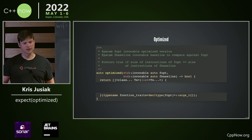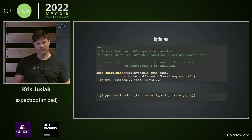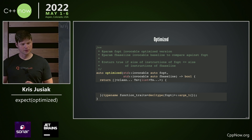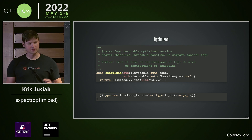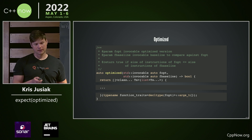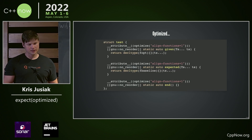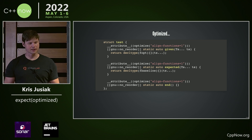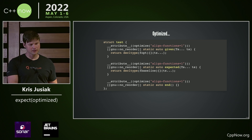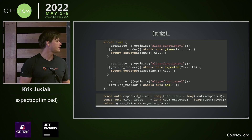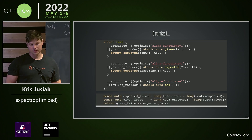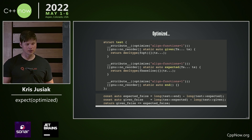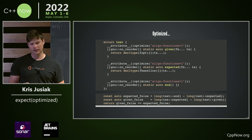So then we can wrap it in a function. In that case we'll have two parameters: one will be the lambda for the optimized version, the other one for the baseline. We verify the parameters, do a bit of magic, and then we get the call site to give us a given/when/then structure — given expected — and we can calculate the offsets of the function instructions. If the given size is smaller than the expected size, we consider it optimized.